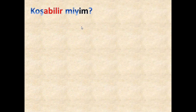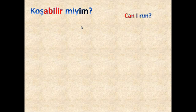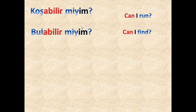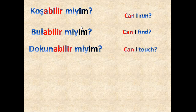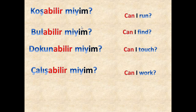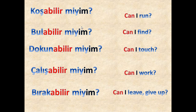Let's go to the question form — I hope you're taking notes. 'Koşabilir miyim?' means 'can I run' or 'may I run'. 'Bulabilir miyim?' — can I find? 'Dokunabilir miyim?' — can I touch or may I touch? 'Çalışabilir miyim?' — can I work? 'Bırakabilir miyim?' — can I leave or can I give up? Note: if there is an object for any of these verbs, it comes before the verb, as in Turkish the verb usually comes at the end of the sentence.